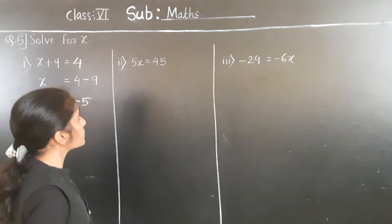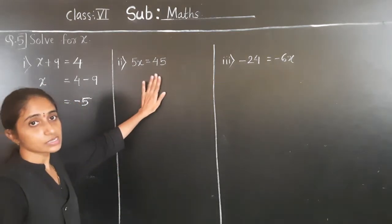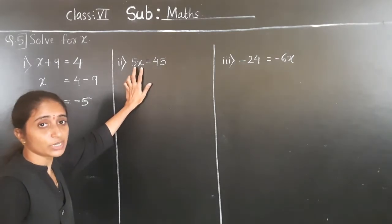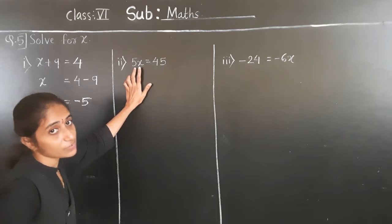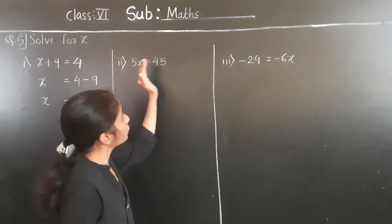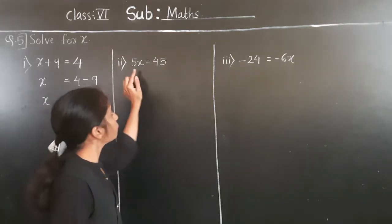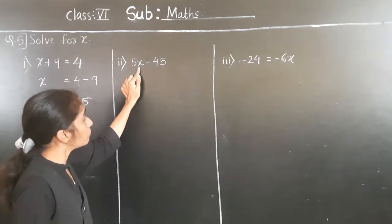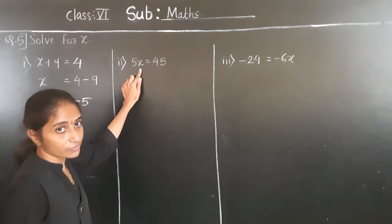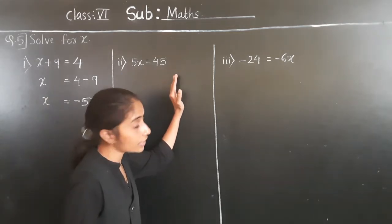Next: 5x is equal to 45. Now 5x means 5 multiplied by x — so 5 is here multiplied. If we transfer 5 to the right hand side, then it will become division.